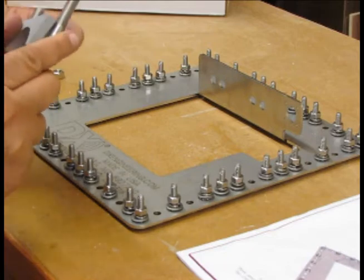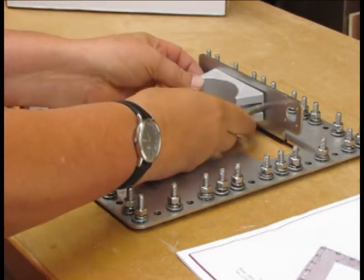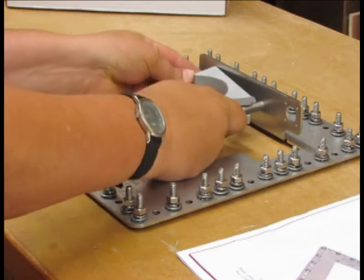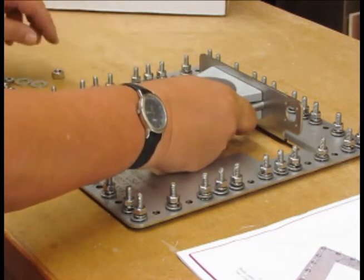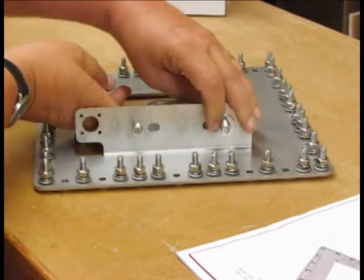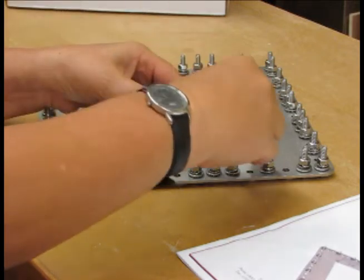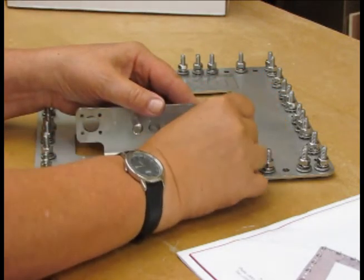The saddle clamp simply passes through these pre-cut holes, and the hardware installs on the other side: a couple of washers, a split washer, and nut.